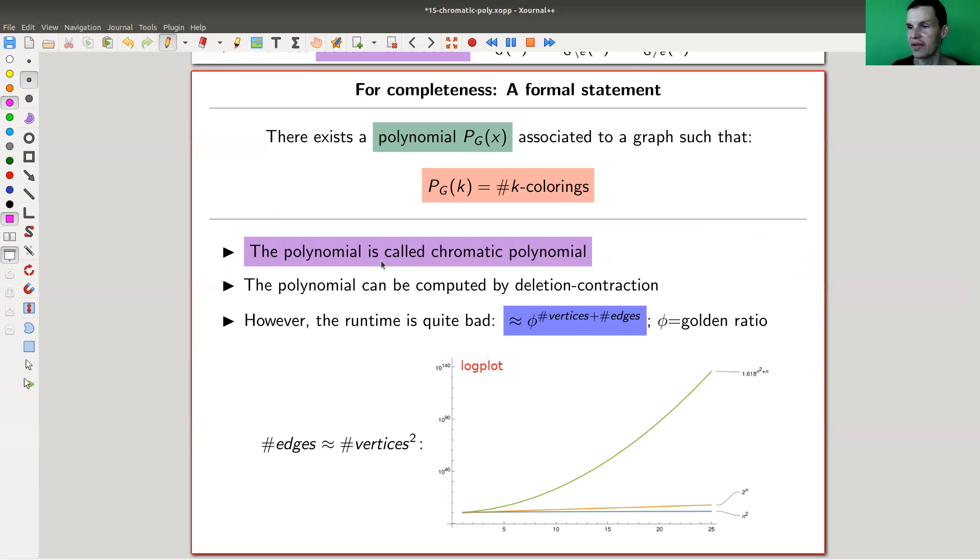And it can be computed in quite, quite easily. The runtime, if you wonder, is pretty bad. So it's something like the golden ratio to the n squared. So it's not really great. So where n is the number of the edges. So vertices squared.